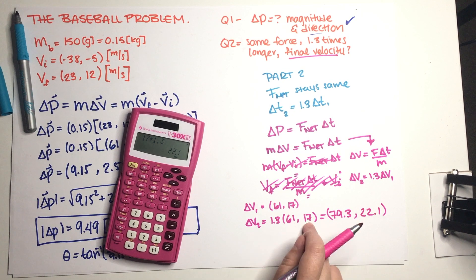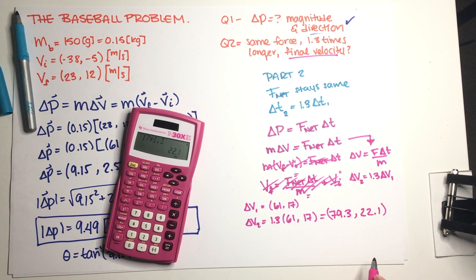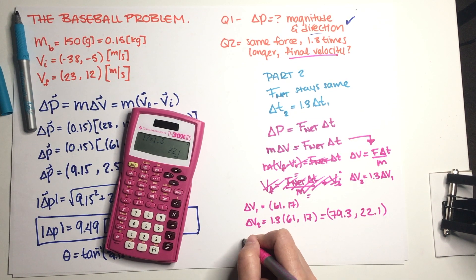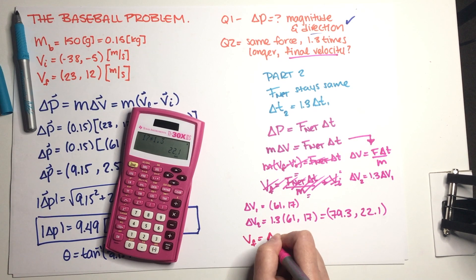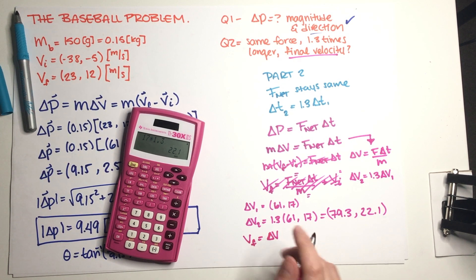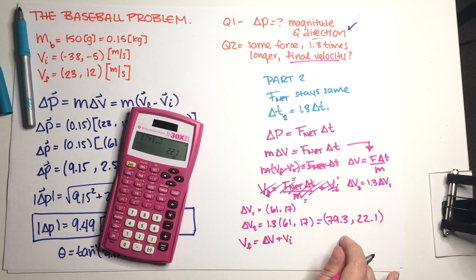However, they are asking us for a final velocity and what we got is a delta v. So at this point we actually need to do final minus initial. So v_f is equal to delta v, so delta v is final minus initial, that means that delta v plus v initial is equal to v final. Yes.